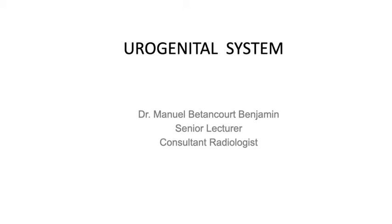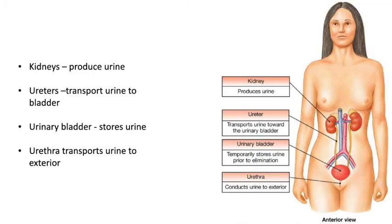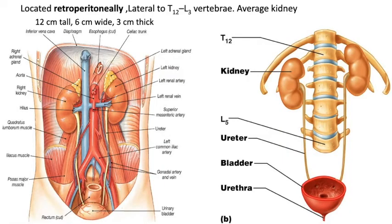Good morning, afternoon, or evening everybody. Welcome to our presentation. Today we will be talking about the urogenital system. Just to remember the anatomy of the urogenital system — we have kidneys, urinary bladder, and urethra. Those are the basic things we have here. This is a sample of where the organs should be located.